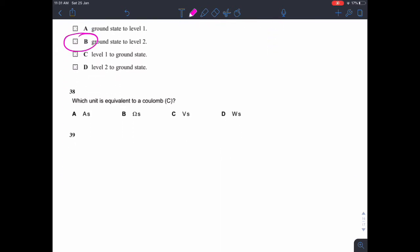Which unit is equivalent to a coulomb? Well, one coulomb is the unit of charge. So charge equals it. Current is in amps. Time is in seconds. So amp seconds would be correct.